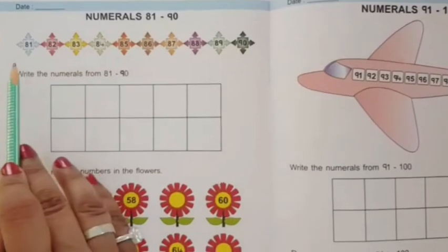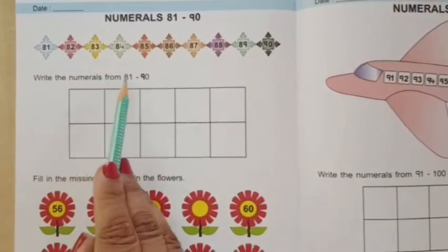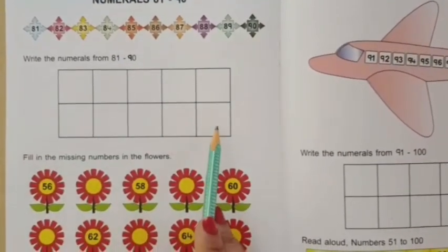You have to read these numerals from 81 to 90 and then write the numerals from 81 to 90 in these boxes.